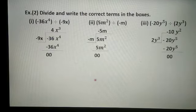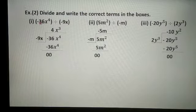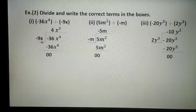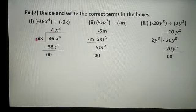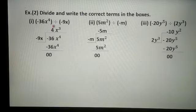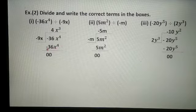Now let's see example 2. We have taken 3 parts of example 2, and we will write the correct terms in the boxes. First: minus 36x raised to 4 is divided by minus 9x. Both are monomials with subtraction signs. Minus 9 multiplied by 4 is minus 36, and x multiplied by x cube is x raised to 4. So the quotient part is 4x cube.